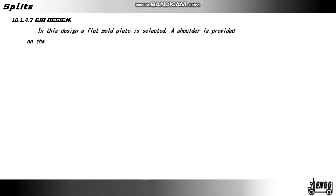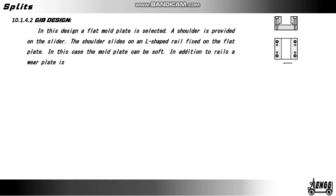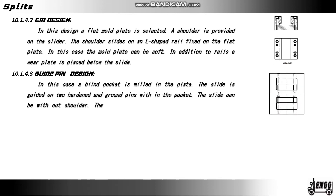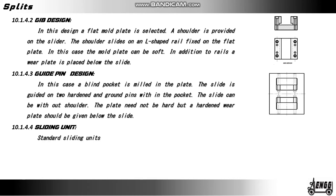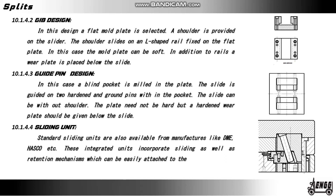Gibbs design: in this design a flat mold plate is selected and a shoulder is provided on the slider. The shoulder slides on an L-shaped rail fixed on the flat plate; in this case the mold plate can be soft. In addition to rails, a wear plate is placed below the slide. Guide pin design: in this case a blind pocket is milled on the plate; the slide is guided onto hardened and ground pins within the pocket. The slide can be without shoulder and the plate need not be hard, but a hardened wear plate should be given below the slide. Sliding units are available from manufacturers like DME, Asco, etc. These integrated units incorporate sliding as well as retention mechanisms which can be easily attached to the mold plate.